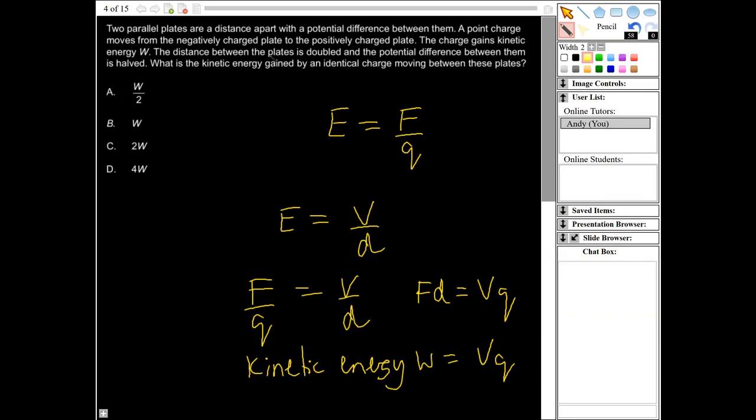So it says the distance between the plates is doubled, and the potential difference between them is halved. So the distance between the plates being doubled isn't going to have an effect, but halving the potential difference between them, halving V, is going to have an effect. So if I make V half the size, I'm going to make W half the size. So therefore the answer is A.